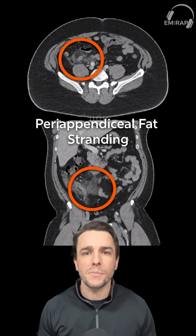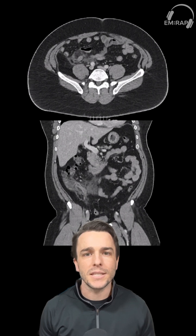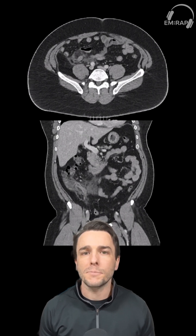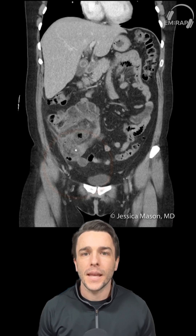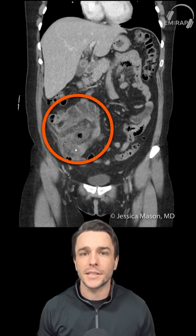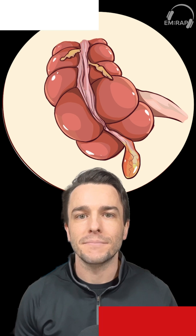Some other things you may find are reactive thickening of the cecum in that area, as well as peri-appendiceal fluid collection. If the fluid collection is pretty big, you have to be concerned about abscess formation. I always advocate for reading your own scans, and now hopefully you have some sort of approach with your patient who presents with acute appendicitis.